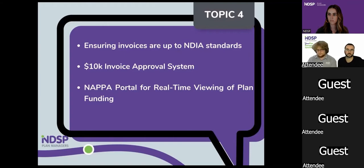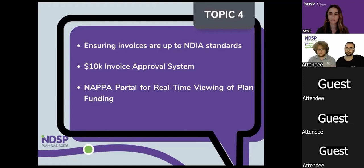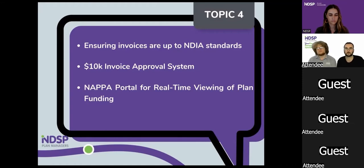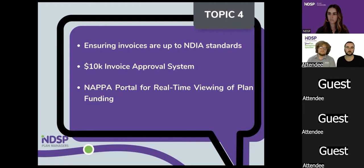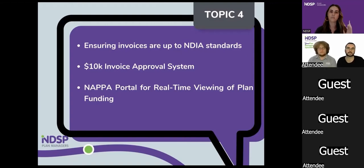We also have a 10K approval system. Invoices over $10,000 go to a specific small team that ensures those services aren't duplicated and that the plan can sustain that amount of money going out. For example, if we received an invoice for $10,000 for a month of services and that was going to continue for subsequent months, the question is whether the plan can sustain that until the end. If not, that triggers a budget alert where we contact the participant, support coordinator, or nominees to discuss it. This is often where we suggest a plan review as early as possible.